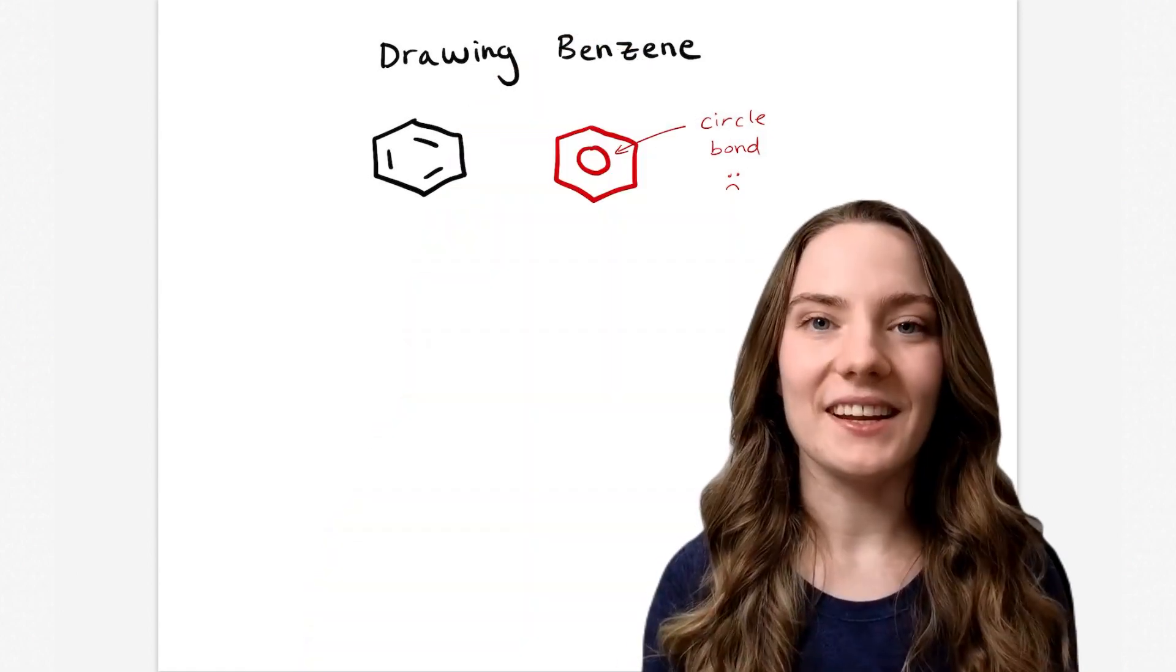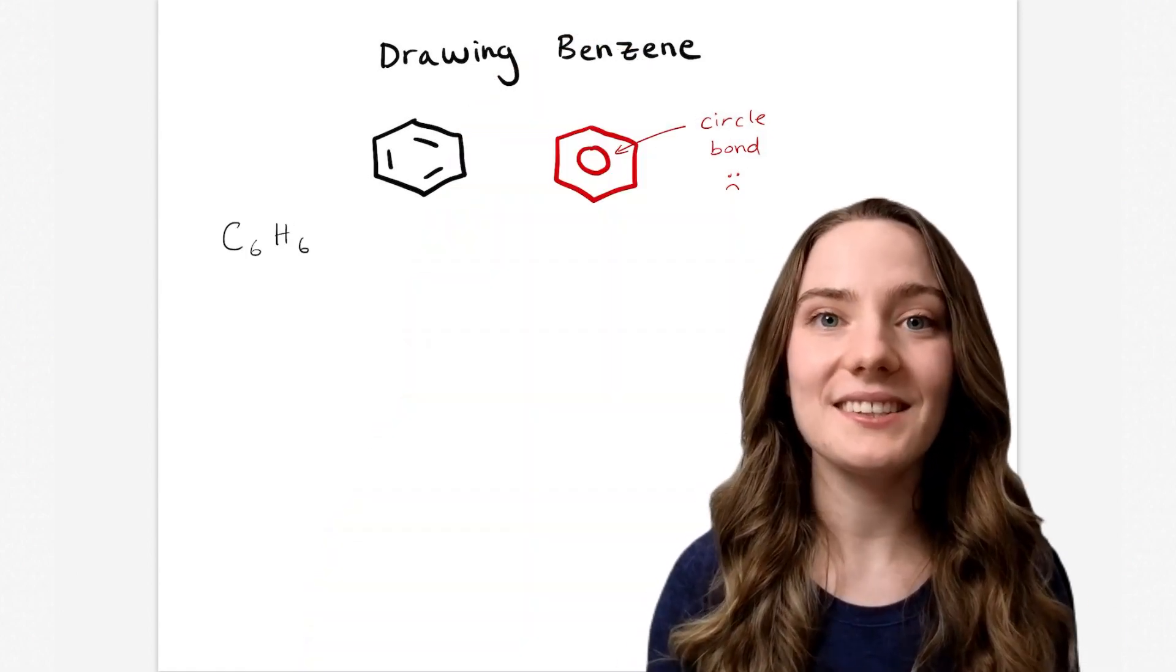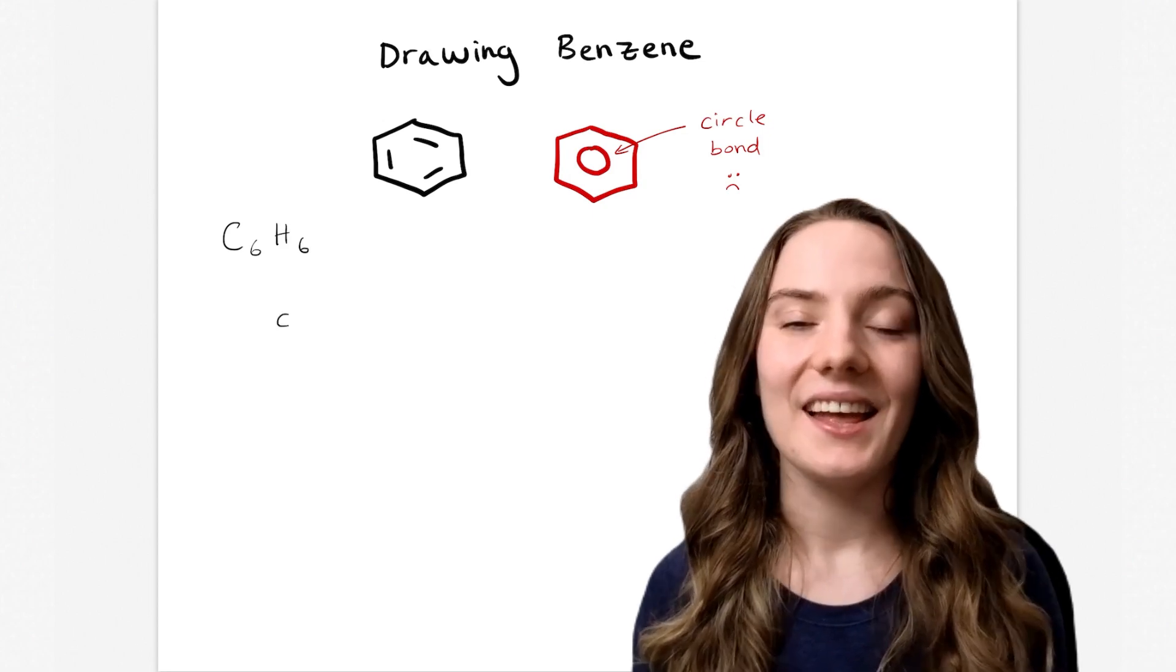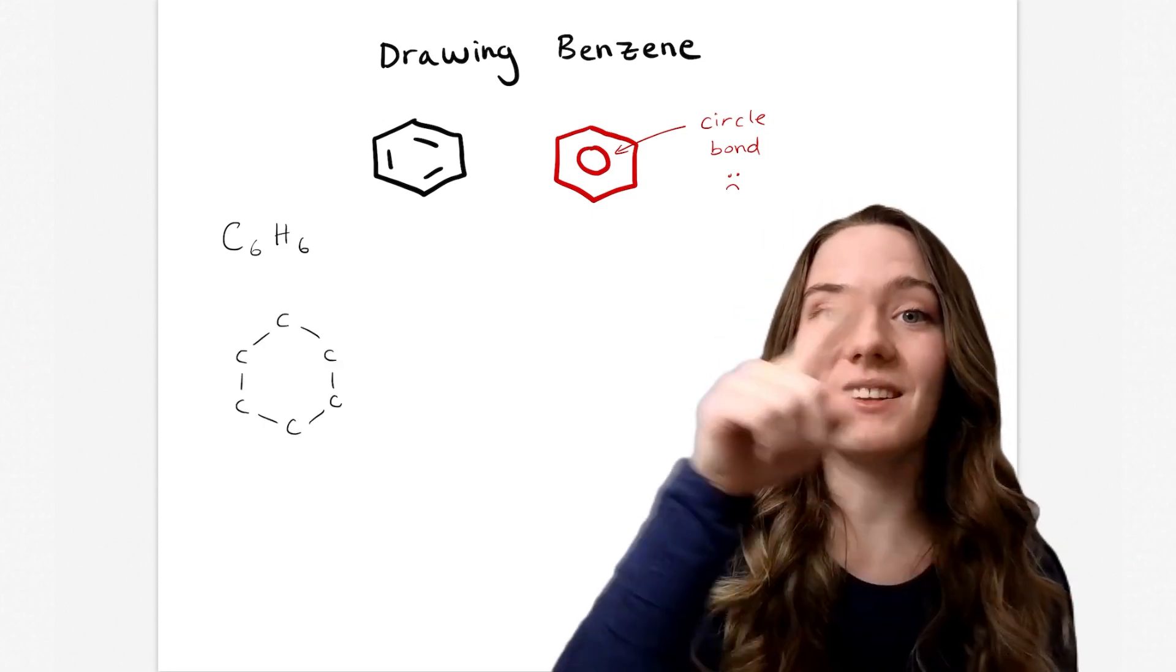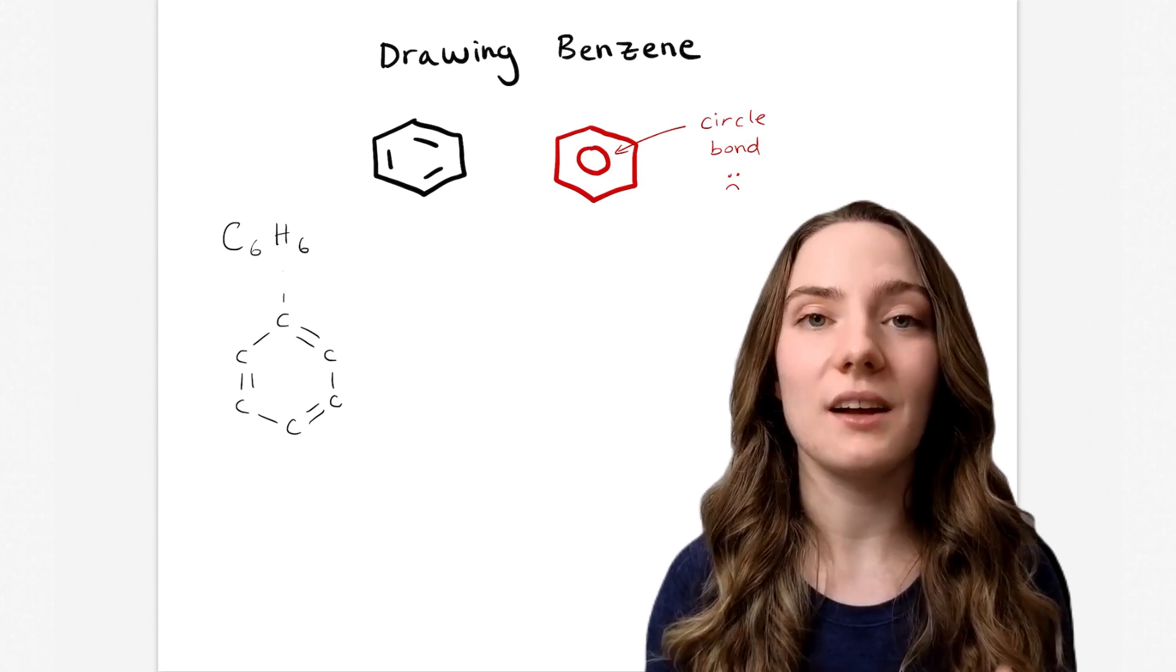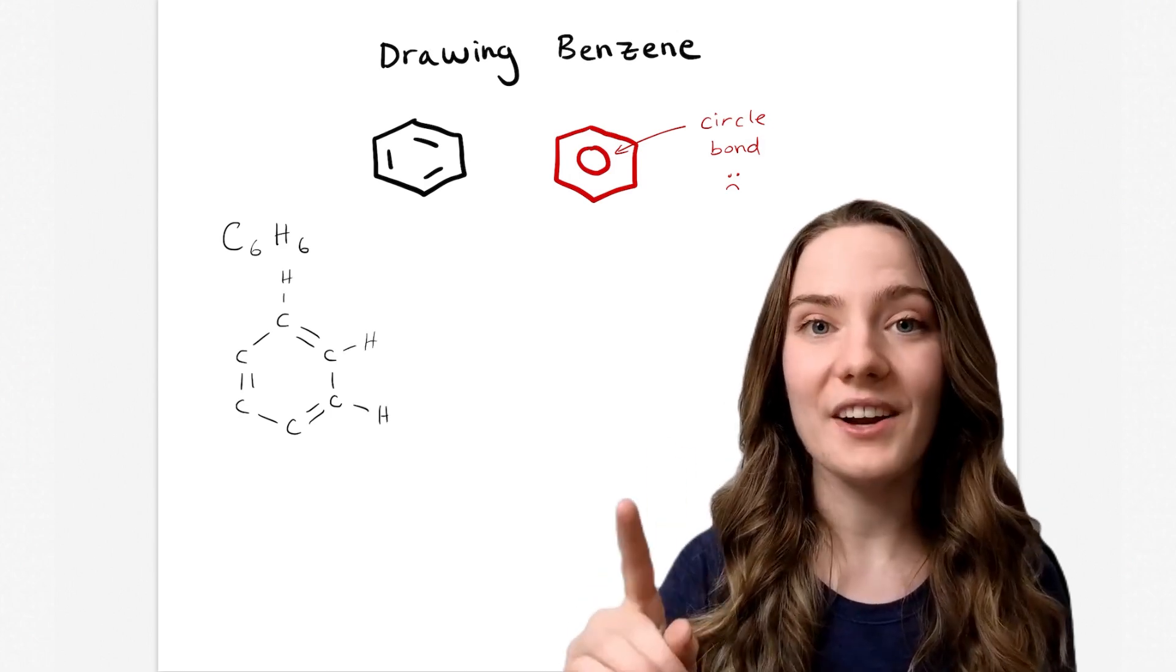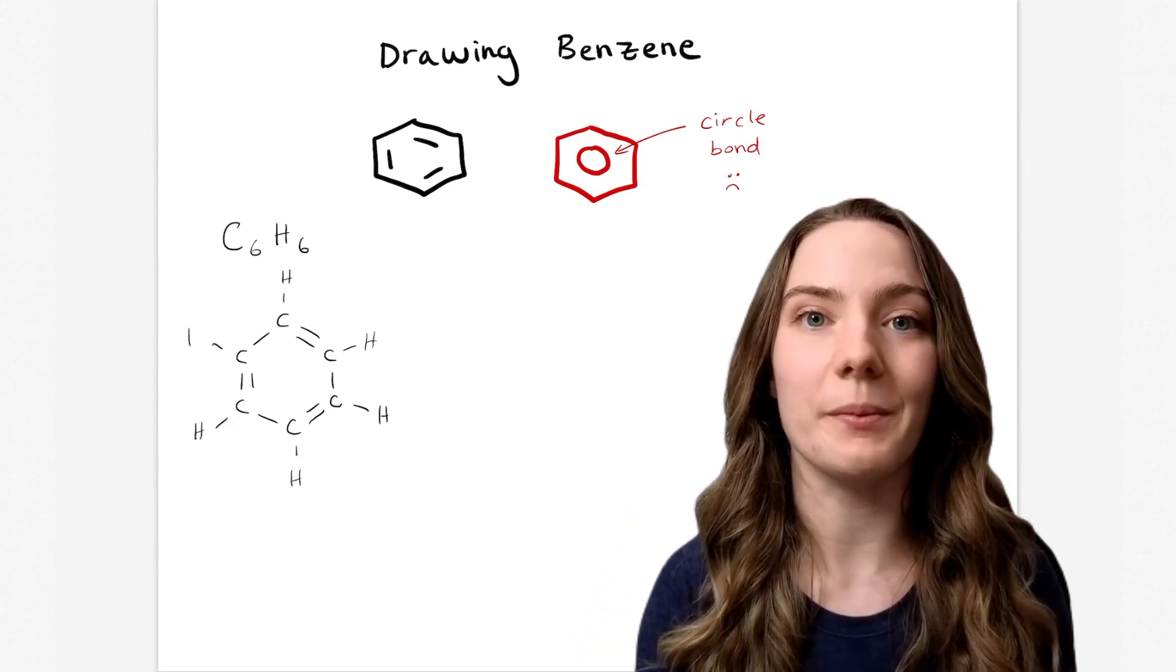Benzene has the chemical formula C6H6. That means it contains six carbon atoms arranged cyclically with alternating double bonds and one hydrogen bonded to each carbon atom.